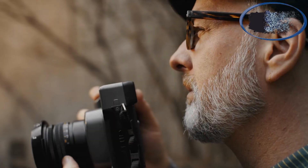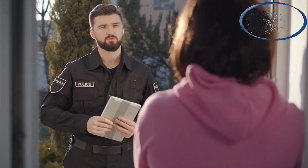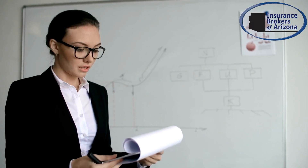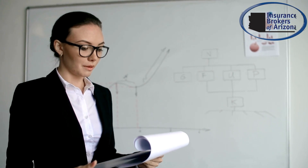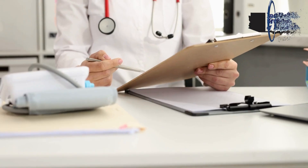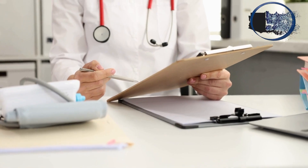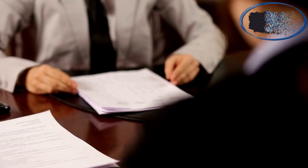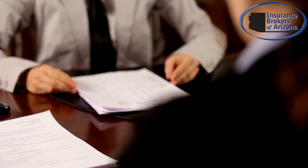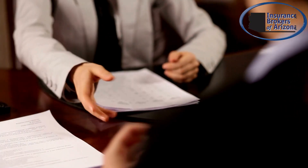The first step is to gather all available information related to the incident. This might include photos, video footage, eyewitness testimony, reports from supervisors or other employees who were involved in the incident, and medical records related to the injury. Make sure that you have all necessary documents and evidence before beginning your investigation.